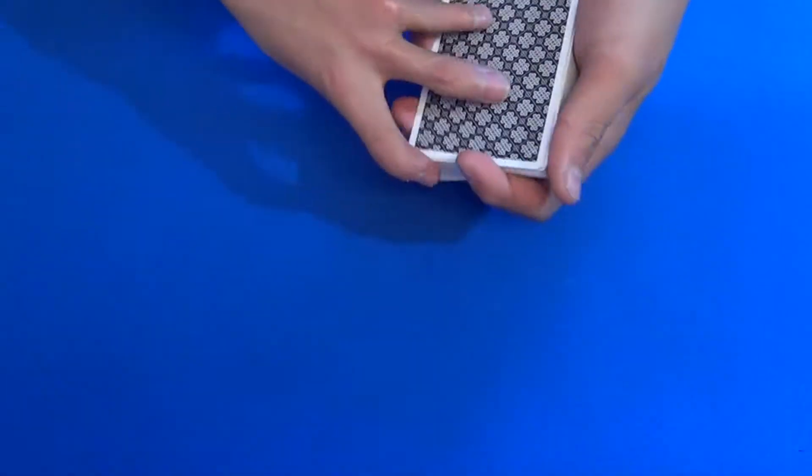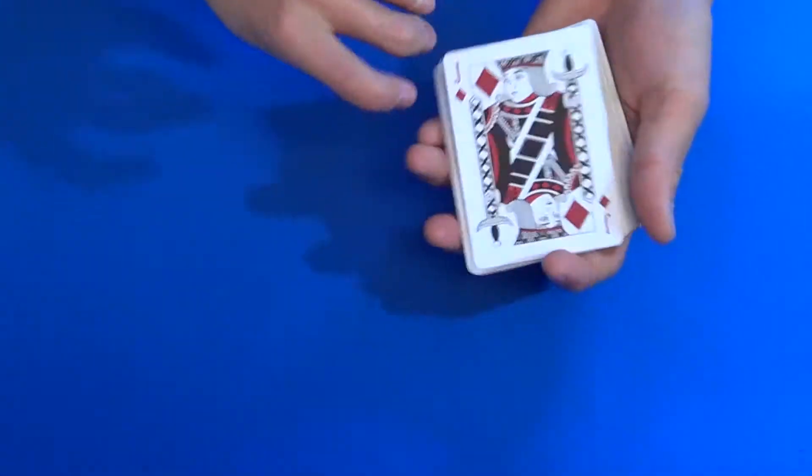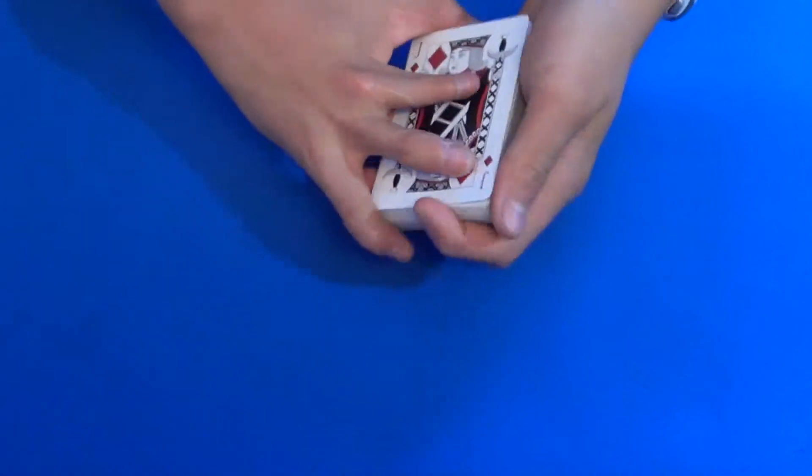And then what you can do is just give it a false cut. So I'm kind of assuming you know how to do a false cut because that's kind of like a staple in magic. But you got the two on the bottom again and you can just redo it.